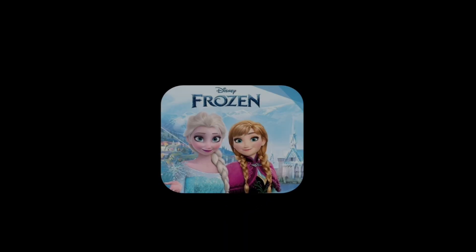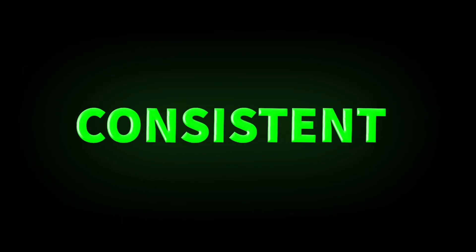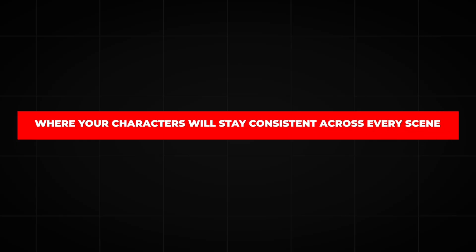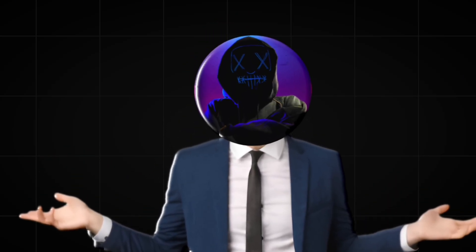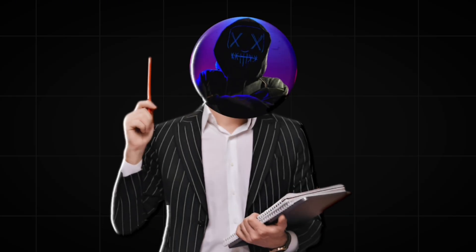Imagine you are watching Frozen, Moana, or Up, and the characters' faces are not consistent in the movie. Would you like them still? No. But now this problem is fixed. In this video, I will show you how to create perfect AI animated stories exactly like those films, where your characters will stay consistent across every scene. And learning this is not an option for you — it's mandatory now. I'll explain why at the end of this video.